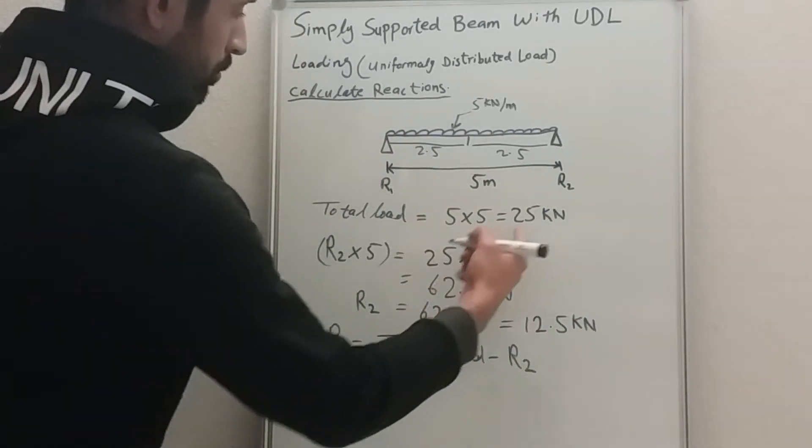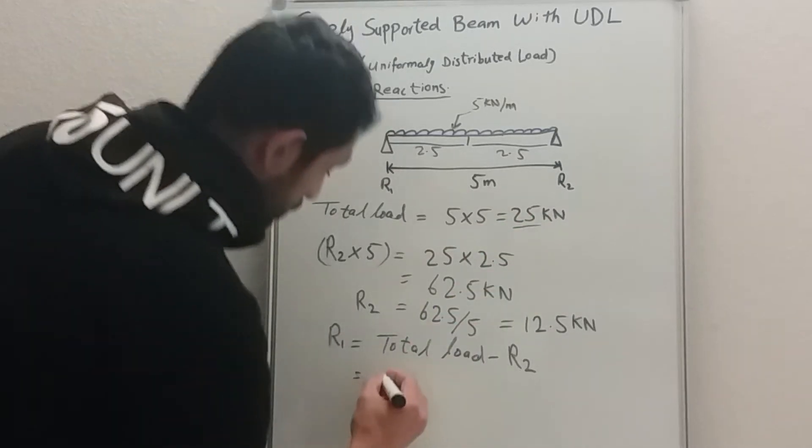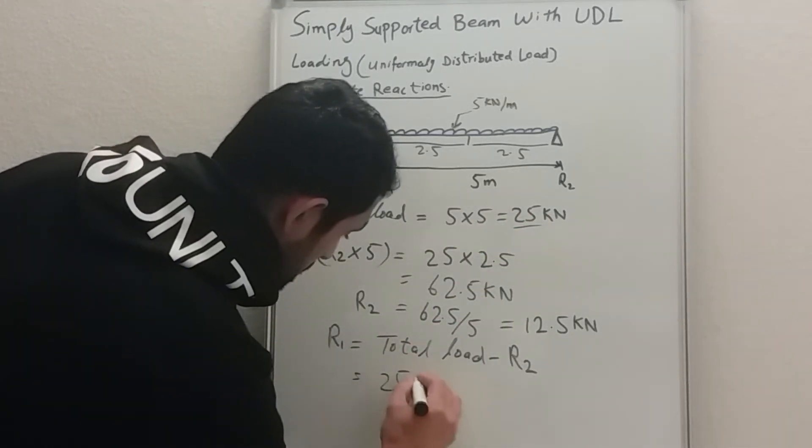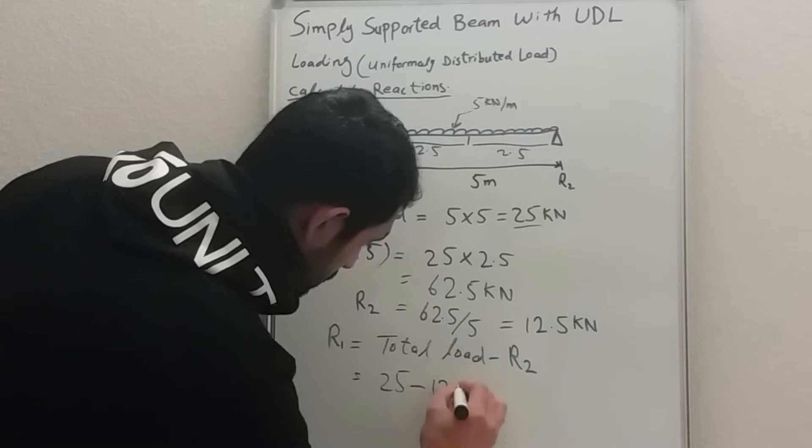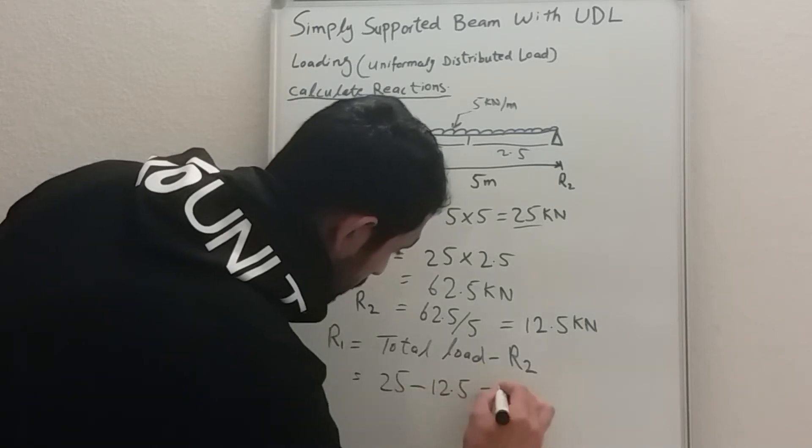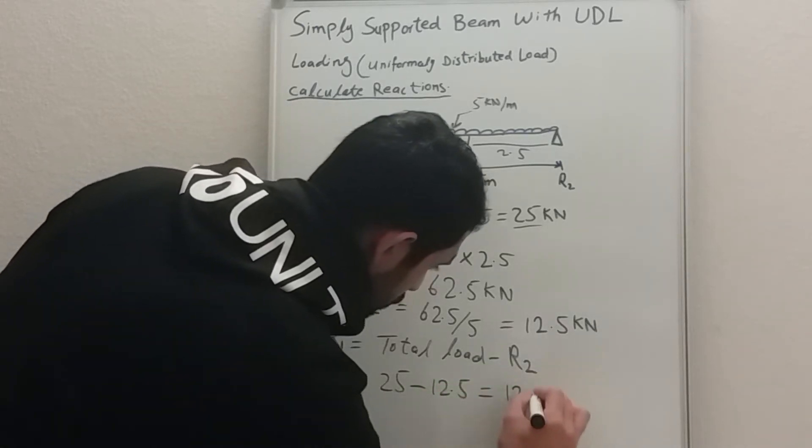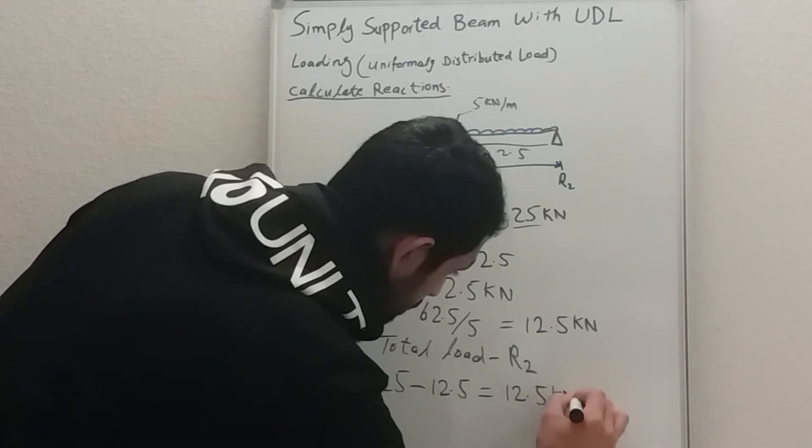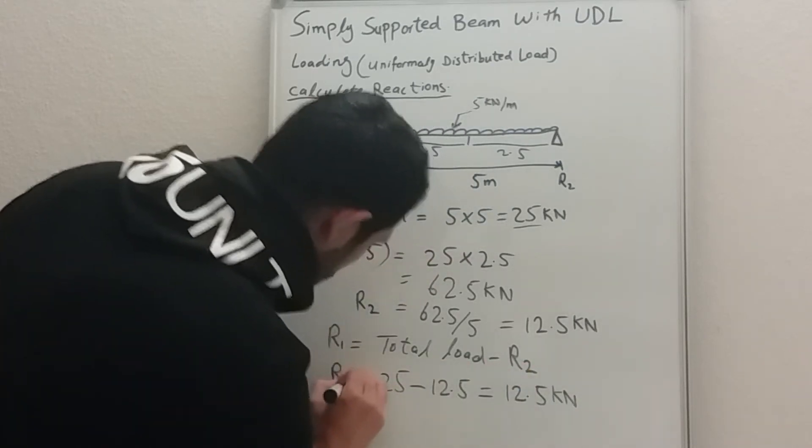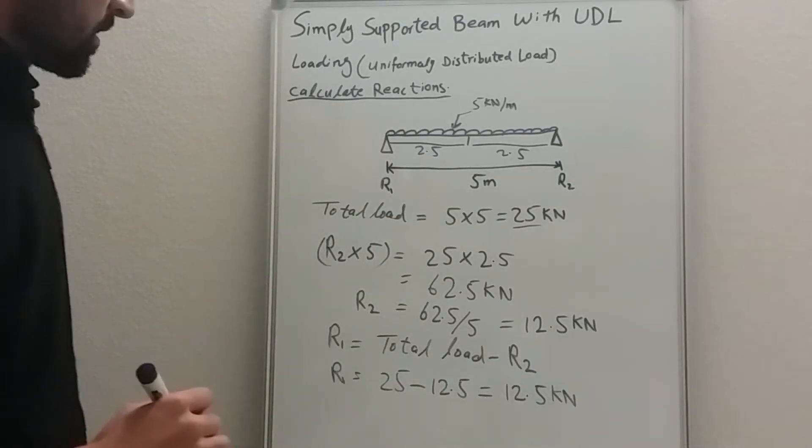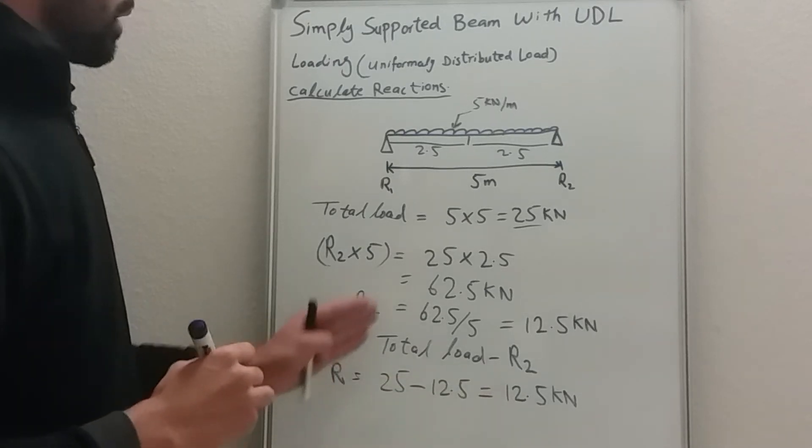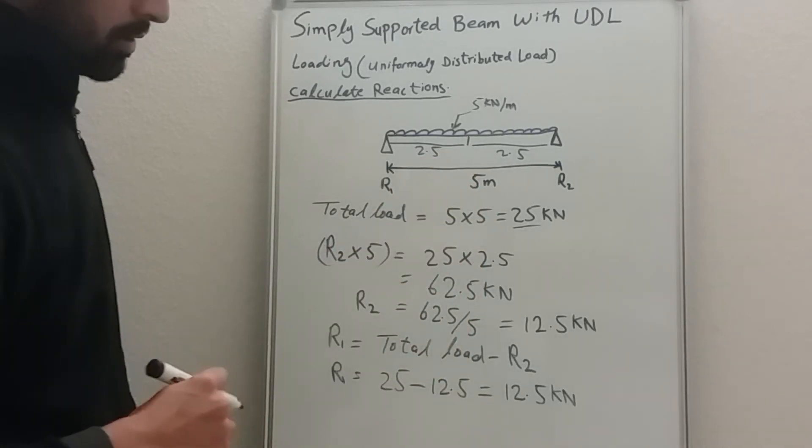Total load is, we have calculated, 25 kilonewtons minus 12.5 kilonewtons, which is going to be 12.5 kilonewtons. So R1 is resisting 12.5 kilonewtons and R2 is resisting also 12.5 kilonewtons.